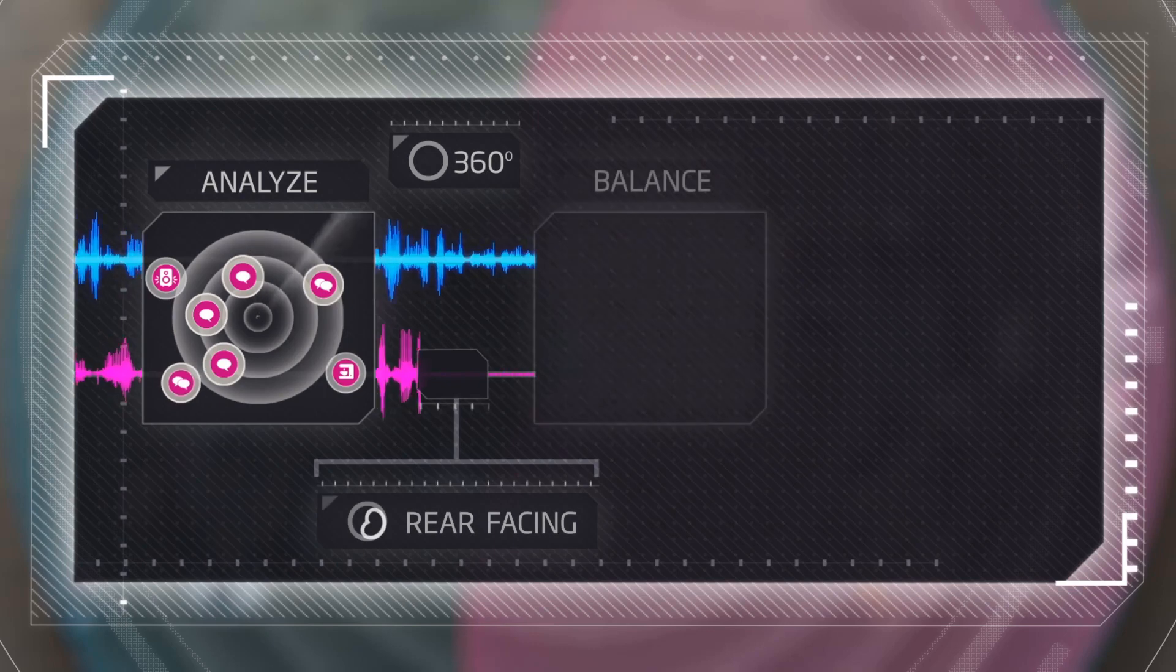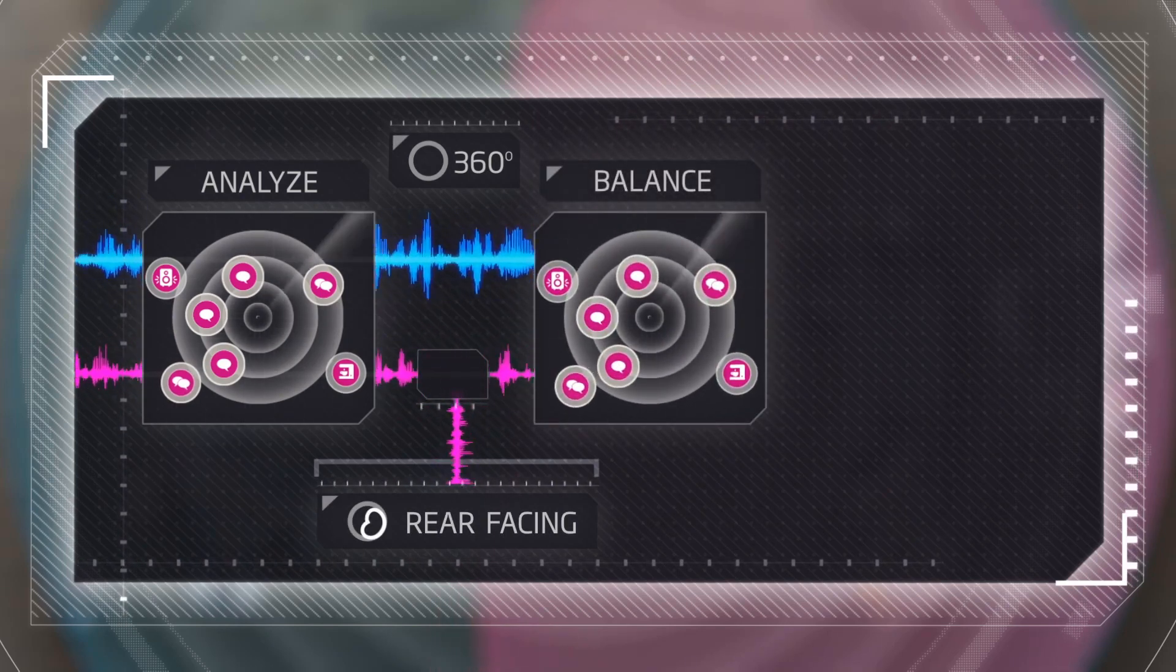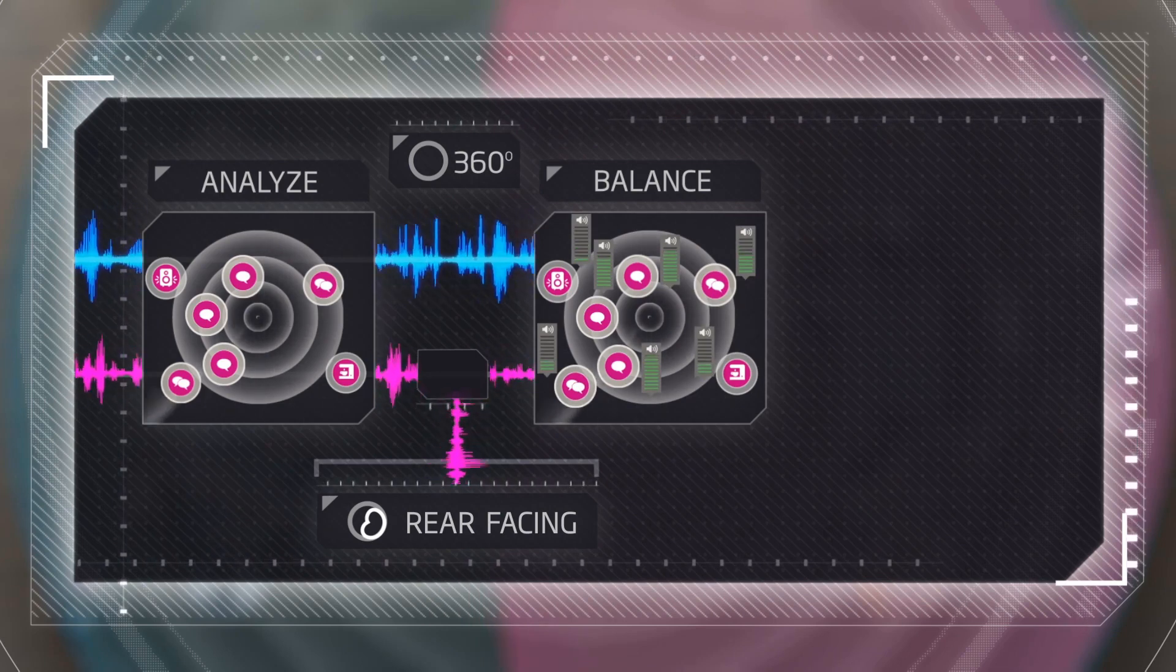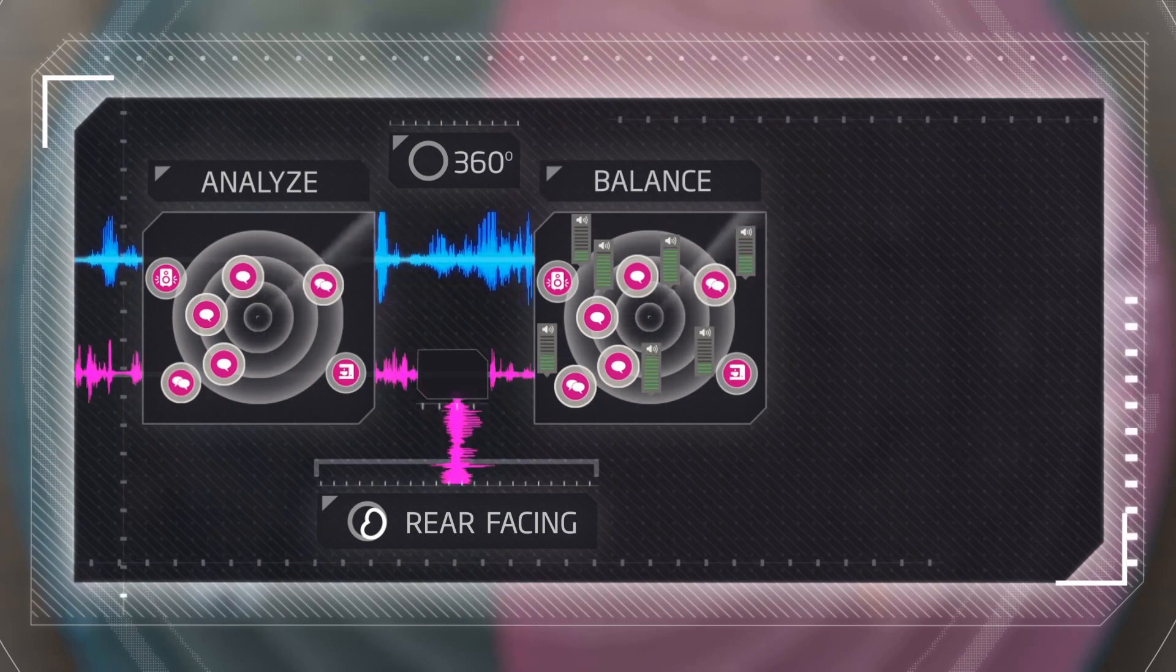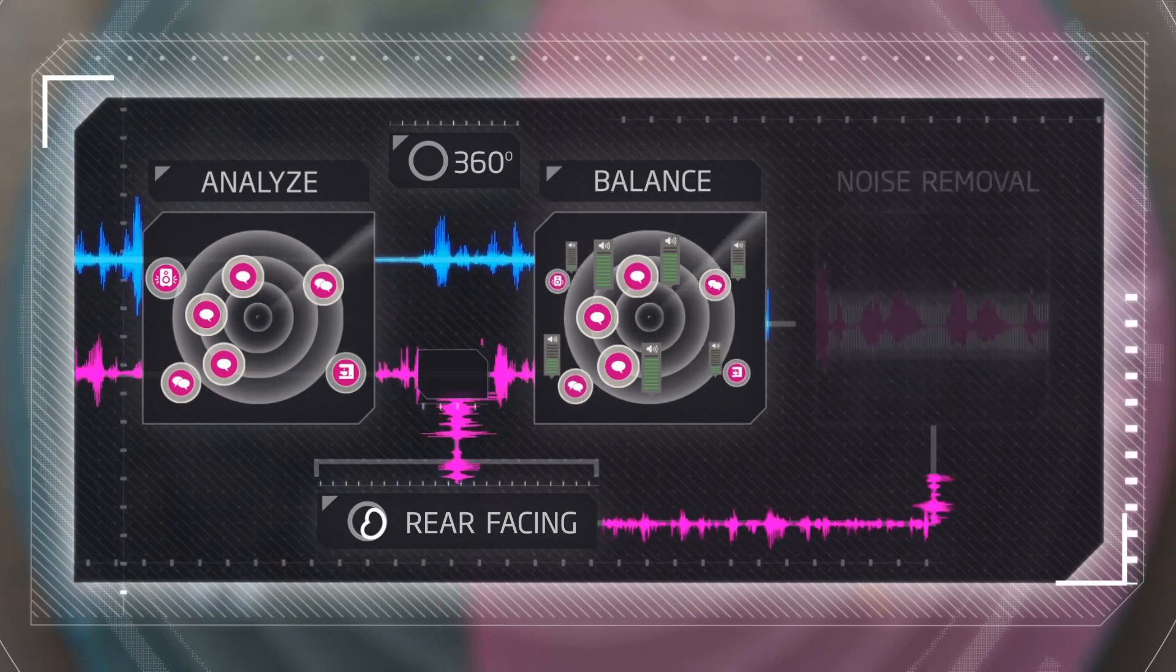With the sounds in the environment analyzed, the 16-channel balance system takes over. Clearly identified speech sources, especially in the front half of the listening field, are preserved. Other sound sources to the back and sides of the listener are reduced.